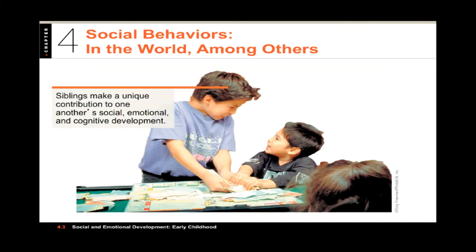Now let's talk about siblings for a moment. Siblings do a lot of things — they can give physical care if they're old enough, provide emotional support and nurturance, offer advice, serve as role models, provide social interaction, and help develop social skills. They can also make demands and impose restrictions, and they can make a big difference for their siblings. On the other hand, there can also be a lot of stress in having a sibling, in terms of fighting and competition that can occur.